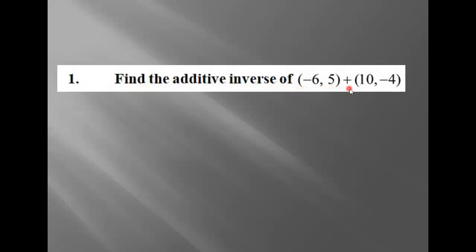Find the additive inverse of minus six comma five plus ten comma minus four. Each point log a gandhi — the point gaadu ito go complex number. The first value is the real part, the second value is the imaginary part. Inside the brackets, ten is the real part and minus four is the imaginary part.